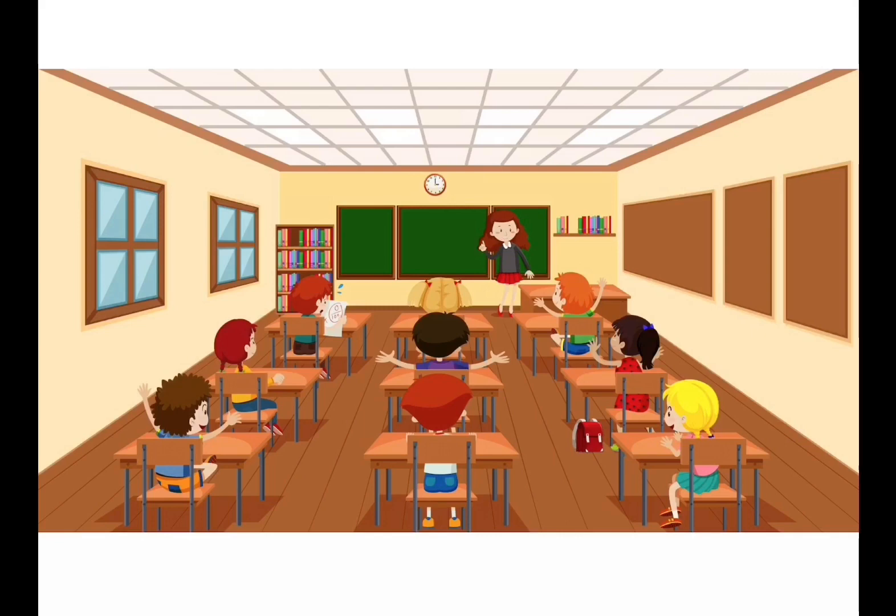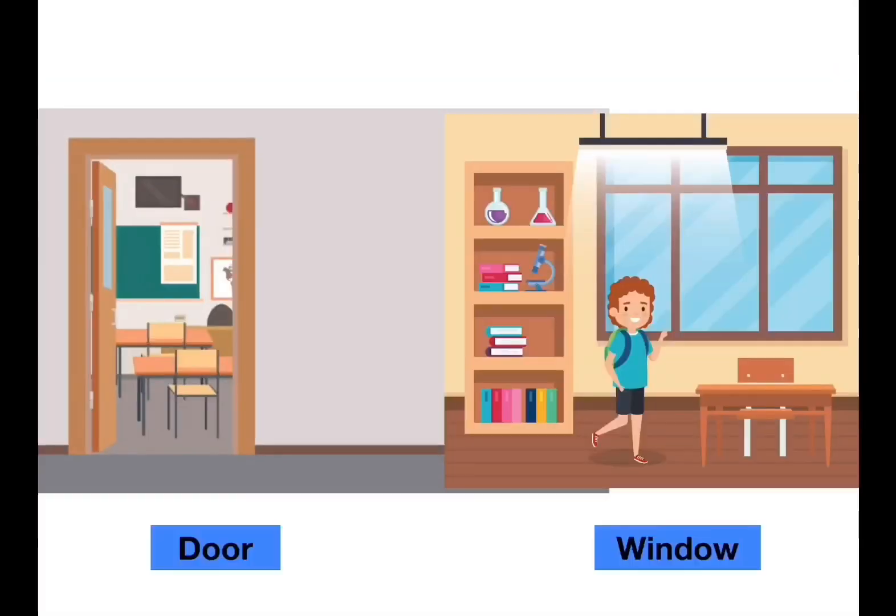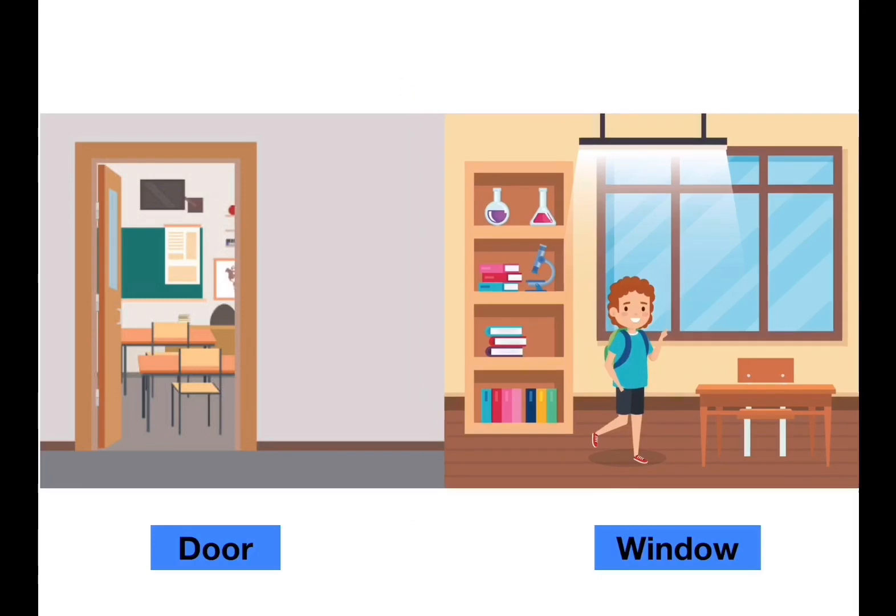A classroom consists of many things. Let us see which are the various things that we see in a classroom. Door, Window - We use the door to enter the class and the windows allow the air to circulate.